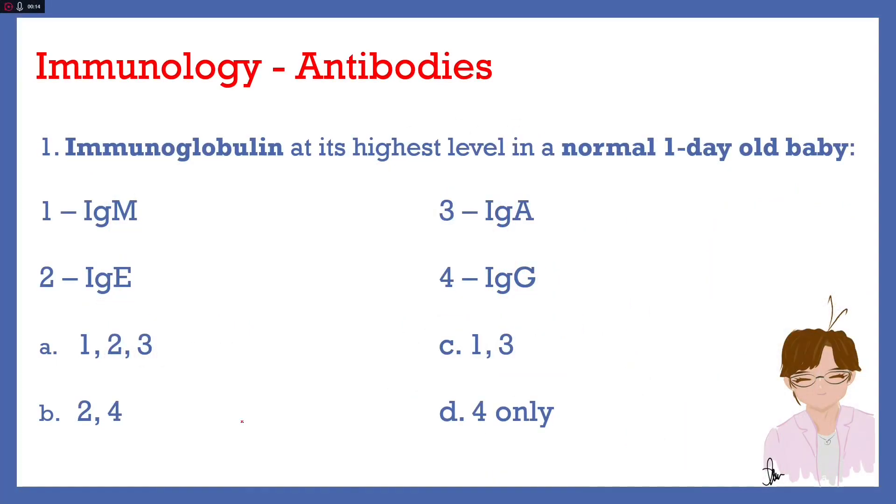Alright, number 1. Immunoglobulin at its highest level in a normal 1-day-old baby. 1 IgM, 2 IgE, 3 IgA, 4 IgG.